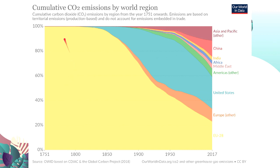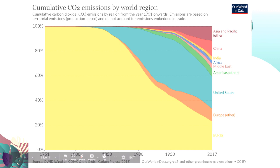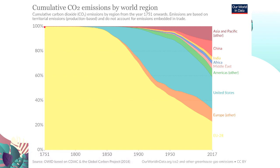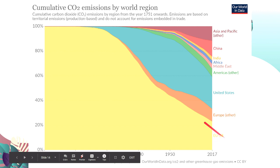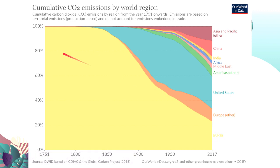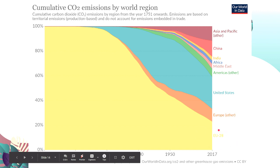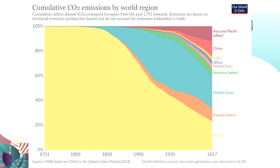This one is from 'Our World in Data' — it shows cumulative carbon dioxide emissions by world region, based on territorial emissions. Looking at the European Union, as the years go by there has been a decrease in emissions — from 100% in 1751 down to just above 20% for the EU and other parts of Europe.